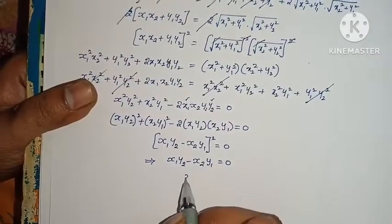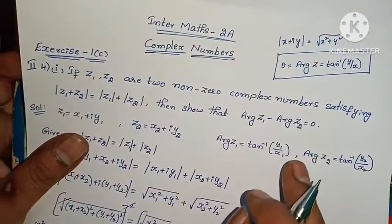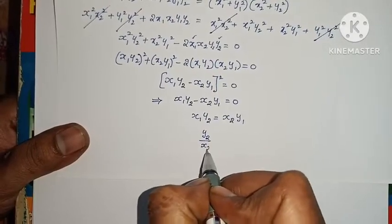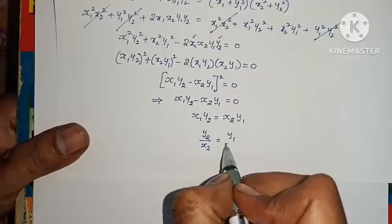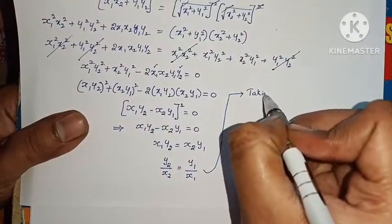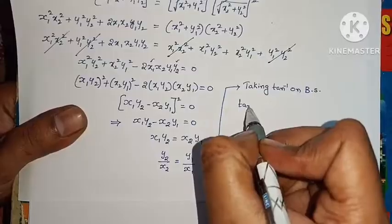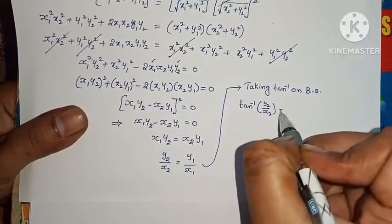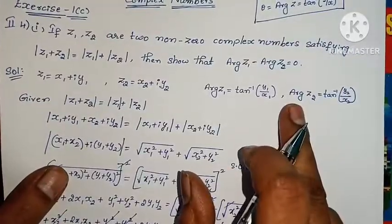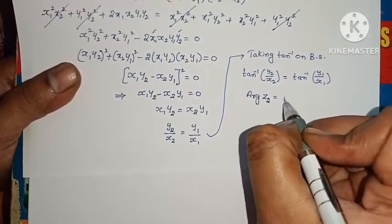From X1Y2 minus X2Y1 equals 0, we get Y2 by X2 equals Y1 by X1. Taking tan inverse on both sides: tan inverse of Y2 by X2 equals tan inverse of Y1 by X1. But tan inverse of Y2 by X2 is arg Z2, and tan inverse of Y1 by X1 is arg Z1. Therefore arg Z2 equals arg Z1.